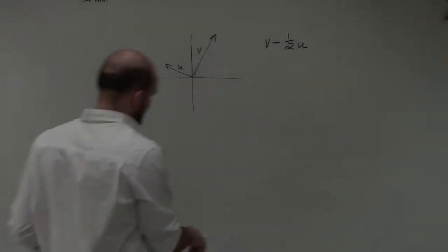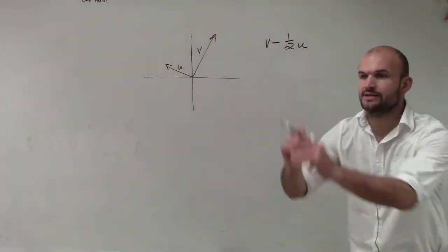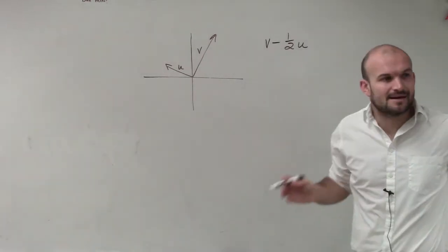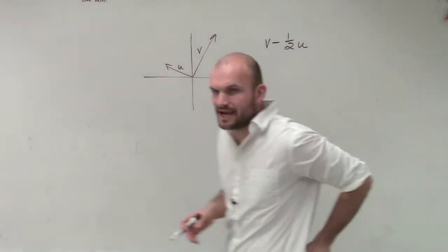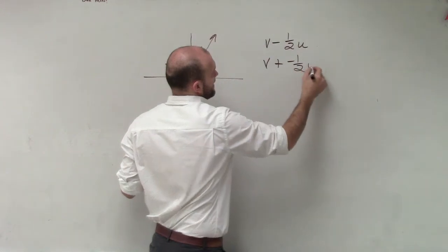All they really want us to do is sketch this graph. So what we're going to do is, remember, any time I have subtraction, I'm going to want to rewrite this as addition. So I'm going to rewrite this as v plus negative one-half u.